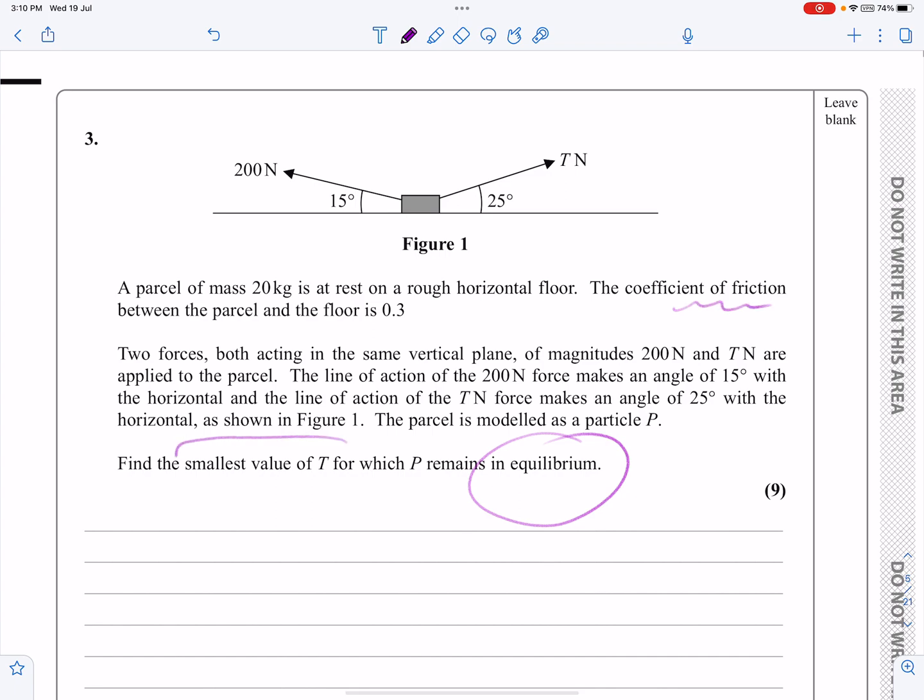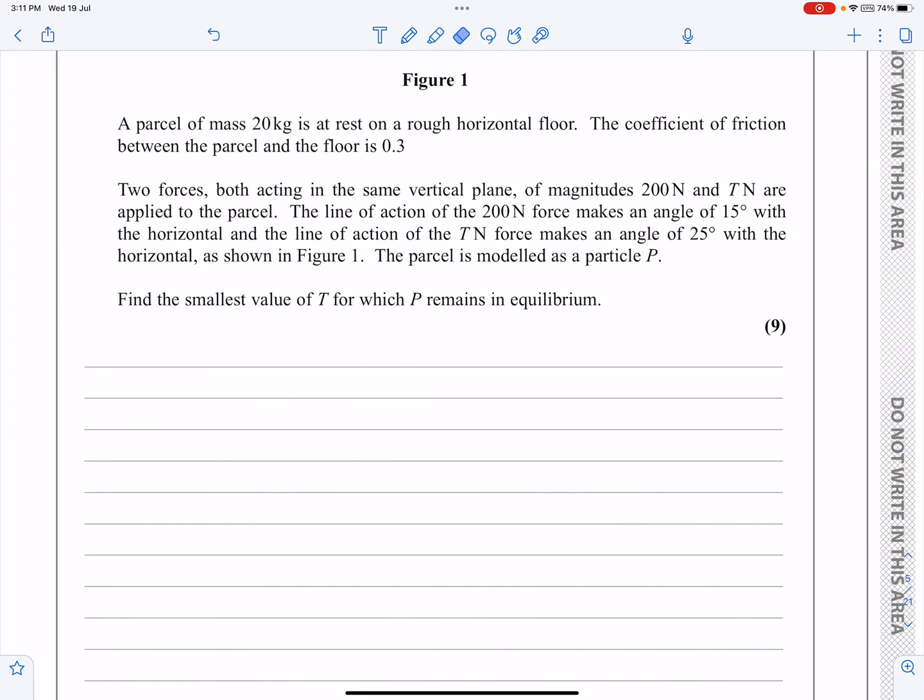What we're going to be trying to do is to find the smallest value of T for which the particle remains in equilibrium. Let's first of all draw out the diagram. Once we've got the diagram drawn out, let's put all our forces on nice and big so that we can see everything on the diagram. Then we can go from there.